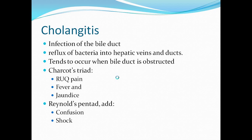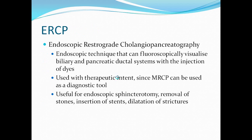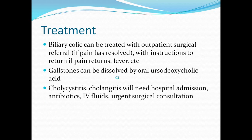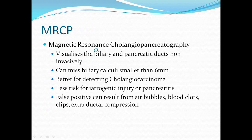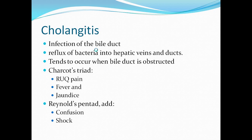Cholangitis is another complication — it's an infection of the bile ducts. This involves reflux of bacteria into the hepatic veins and ducts. This tends to occur when the bile duct is obstructed. You can present classically with Charcot's triad, which is right upper quadrant pain, fever, and jaundice. This becomes Reynolds Pentad when you add the symptoms of confusion and shock.